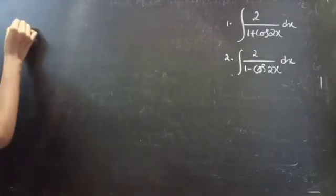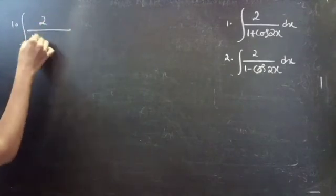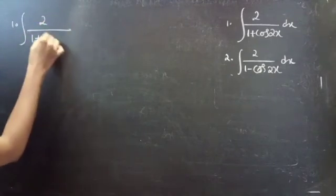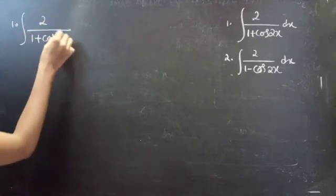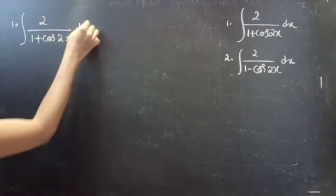First one: integral of 2 by 1 plus cos 2x into dx.